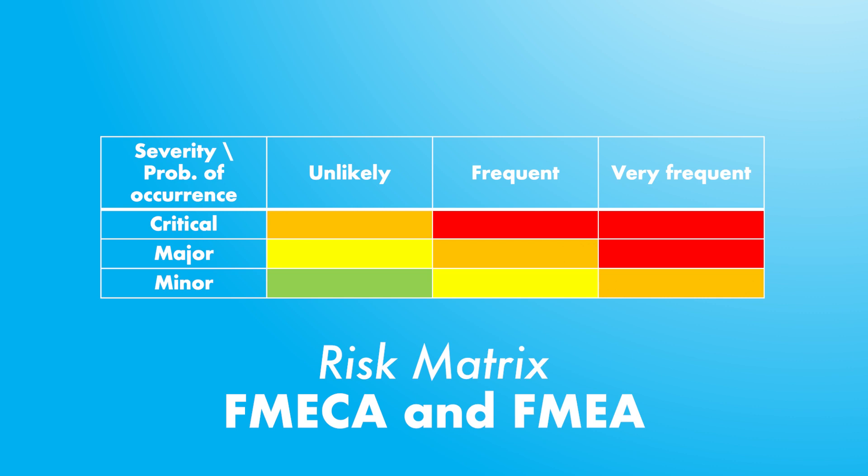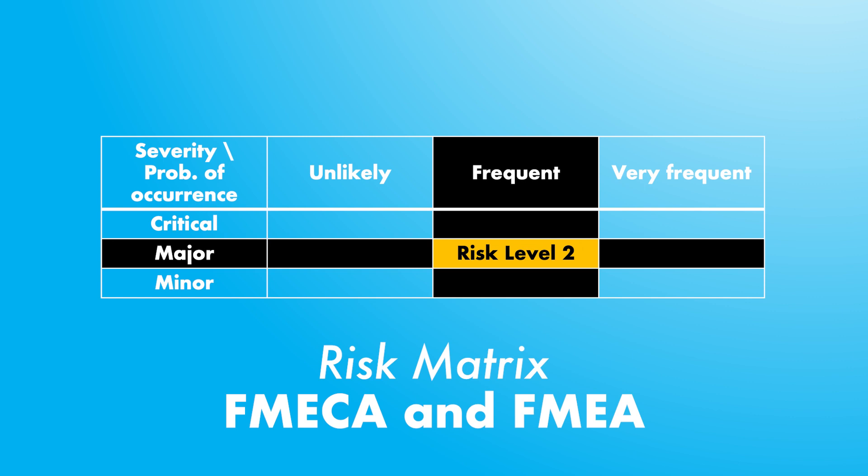FMECA can also use a more qualitative approach instead of criticality number calculations — we can use a risk matrix instead of equations. The risk matrix is a visual tool that allows us to assess the risk level of different failure modes based on their severity and probability of occurrence. It is arranged with severity levels on one side and occurrence levels on the other, and each failure mode is assigned a risk score based on the intersection of severity and probability in the matrix.